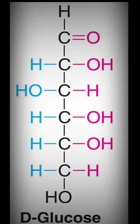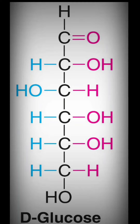Number of asymmetric carbon atoms in glucose. According to the definition of asymmetric carbon atom, that is a carbon which is bonded to four different groups or four different atoms, is called an asymmetric carbon atom.